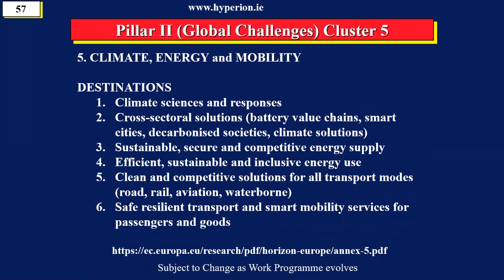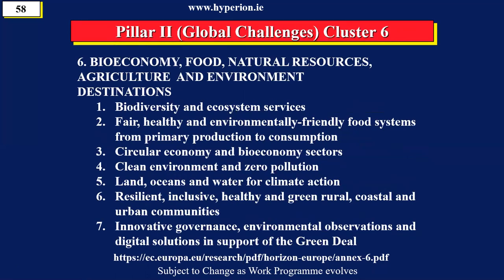Cluster 5 looks at climate, energy, and mobility — and by mobility they mean road, rail, aeronautics, water, and it also deals with space. Cluster 6 then looks at things like bioeconomy, food, natural resources, agriculture, and the environment. Part of the challenge facing scientists is identifying which cluster, which destination, and which topic — and this is why support staff are there to help you with this kind of search.